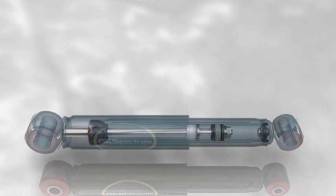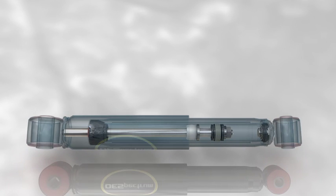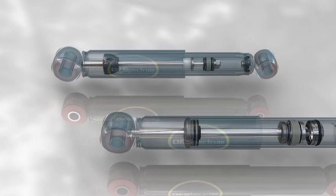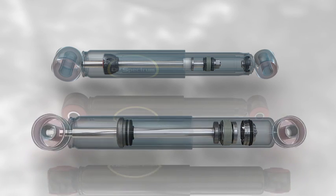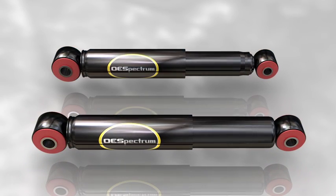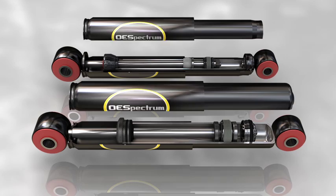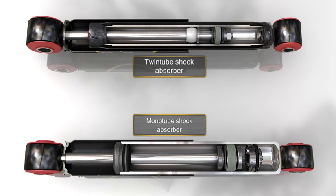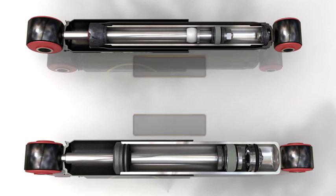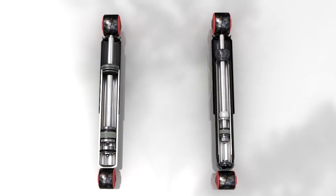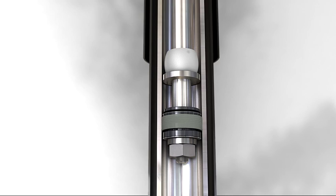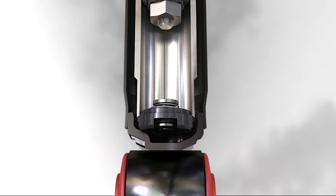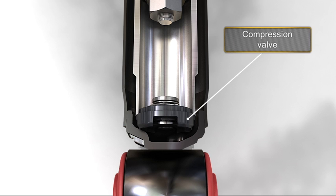The most common type of shock absorber currently used in motor vehicles is the hydraulic telescopic type. Although there are other variants on the market, most units are built with one or two cylindrical steel tubes with the rod moving up and down inside, which is attached to the vehicle. The system includes calibrated valves that allow compression and rebound forces to be adjusted by controlling the oil flow through them in different driving situations.